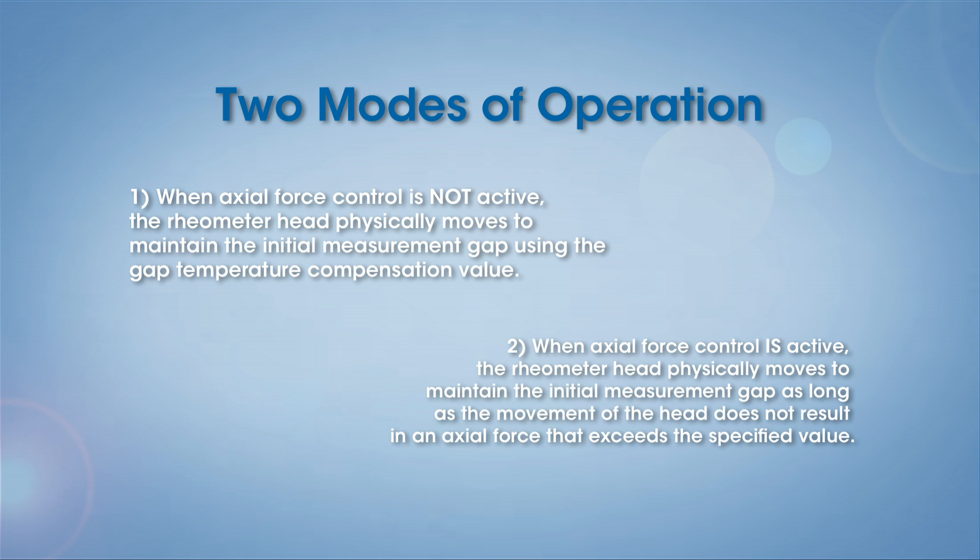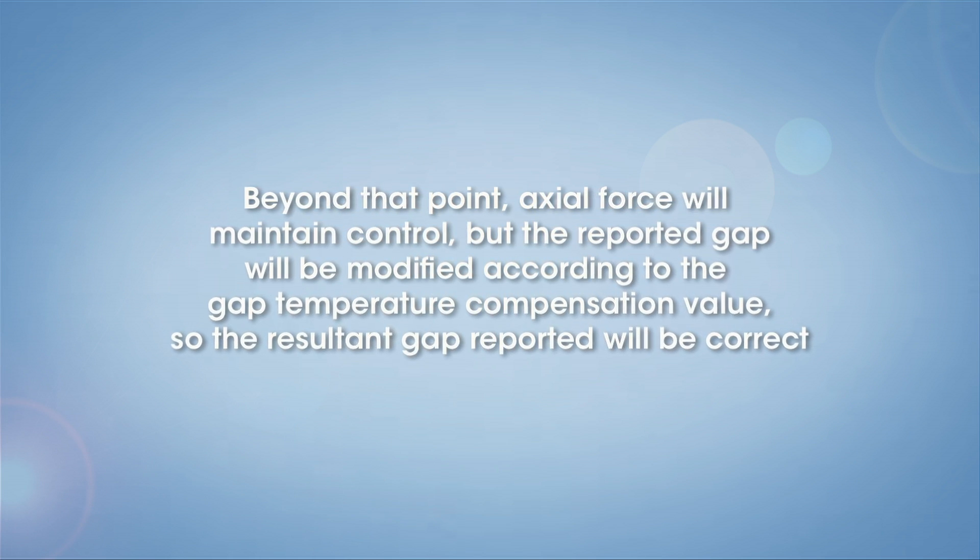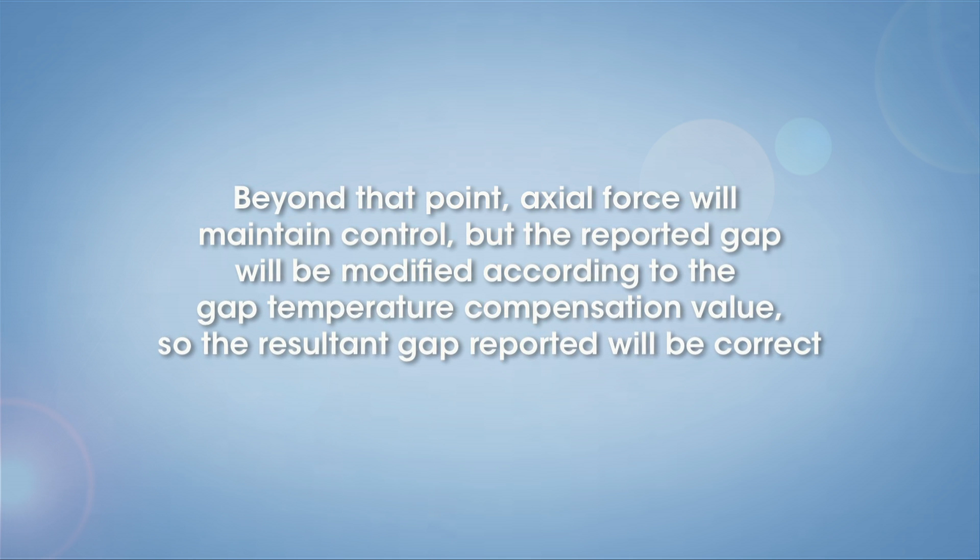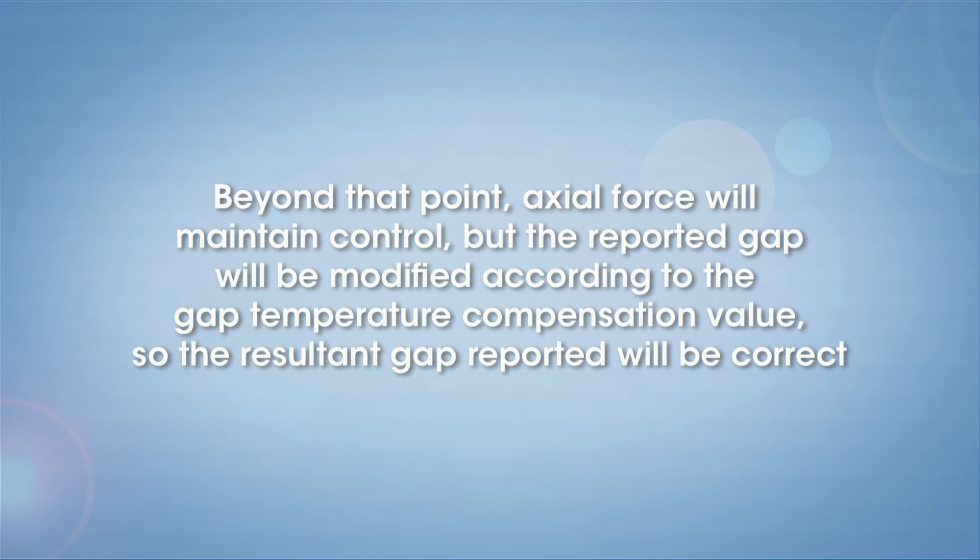When the axial force control is active, the rheometer head physically moves to maintain the initial measurement gap as long as the movement of the head does not result in an axial force that exceeds the specific value. However, beyond that point, axial force will maintain control, but the reported gap will be modified according to the gap temperature compensation value, so the resultant gap reported will be correct.